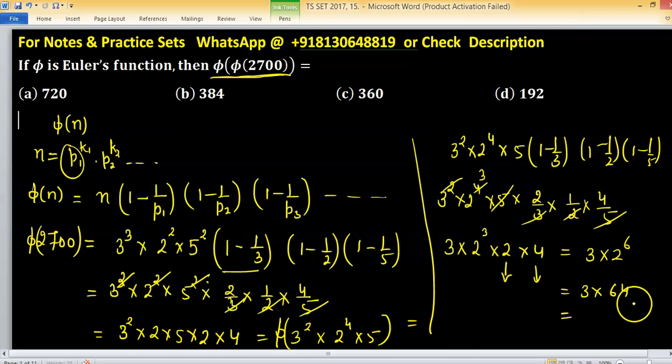Now this value equals to 3 into 64. This value is 192. 3 times 64 is 192. Option D is correct. Perfect.